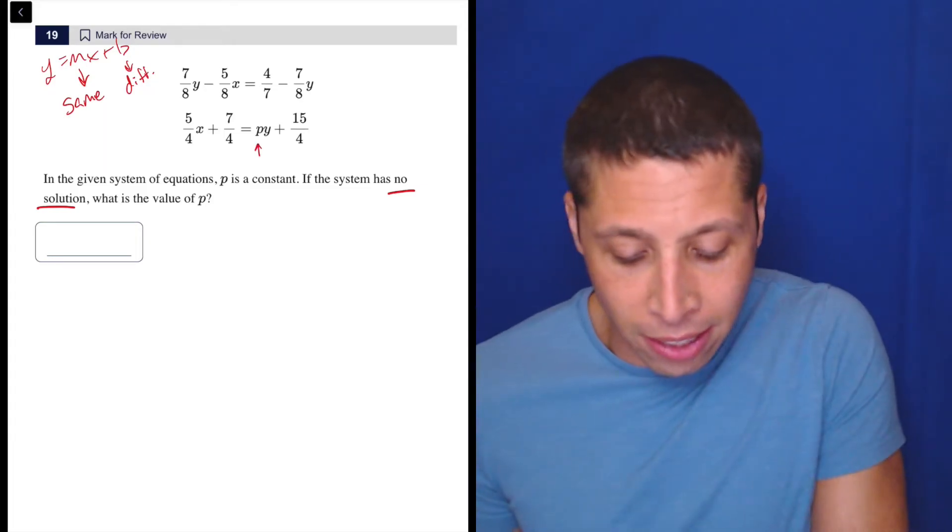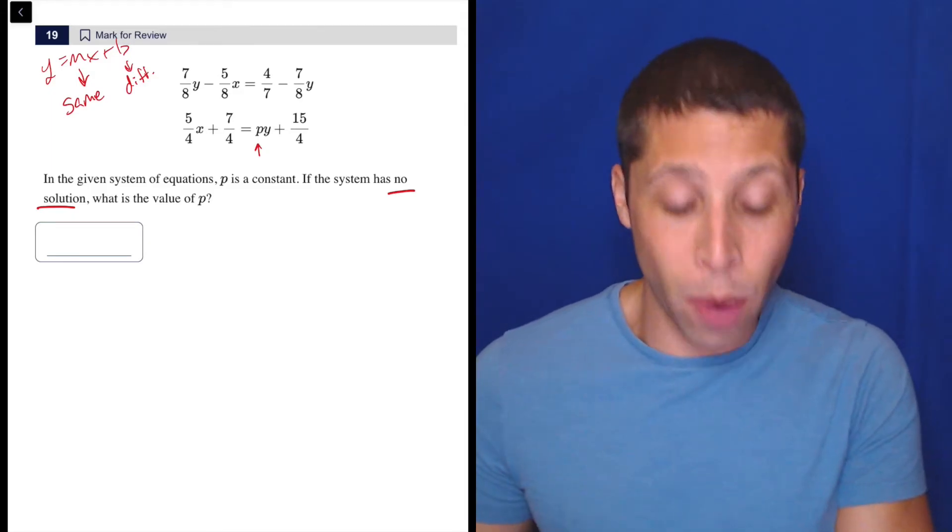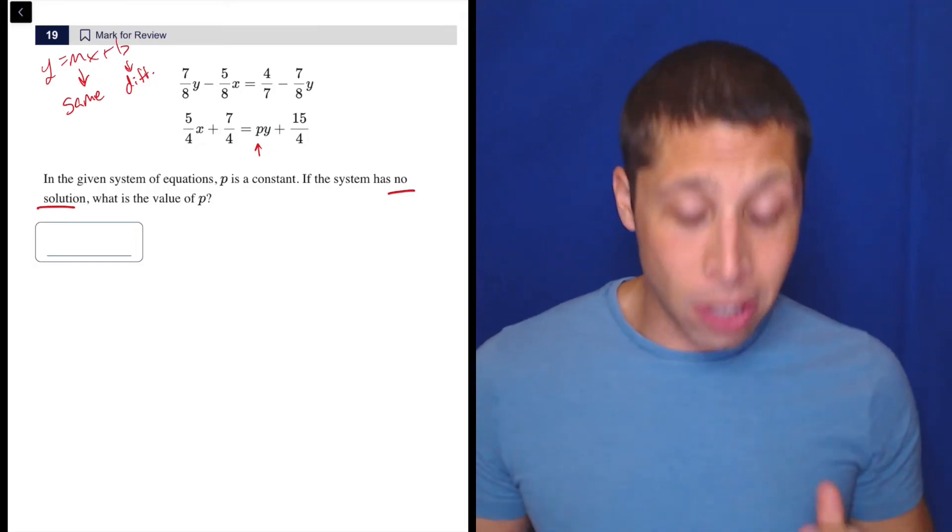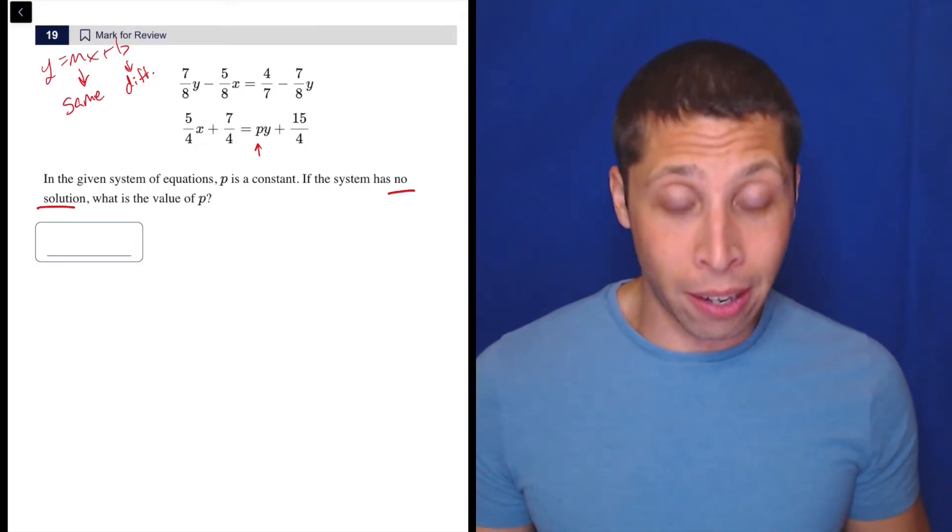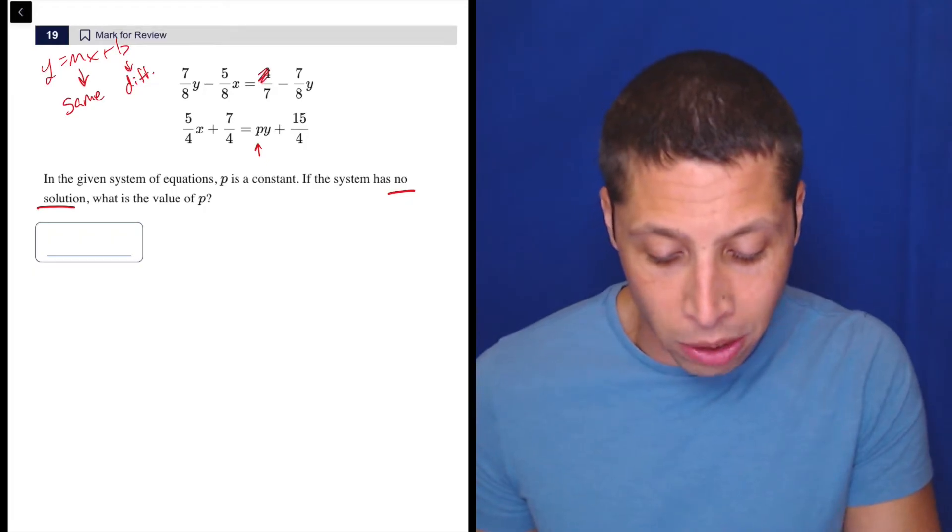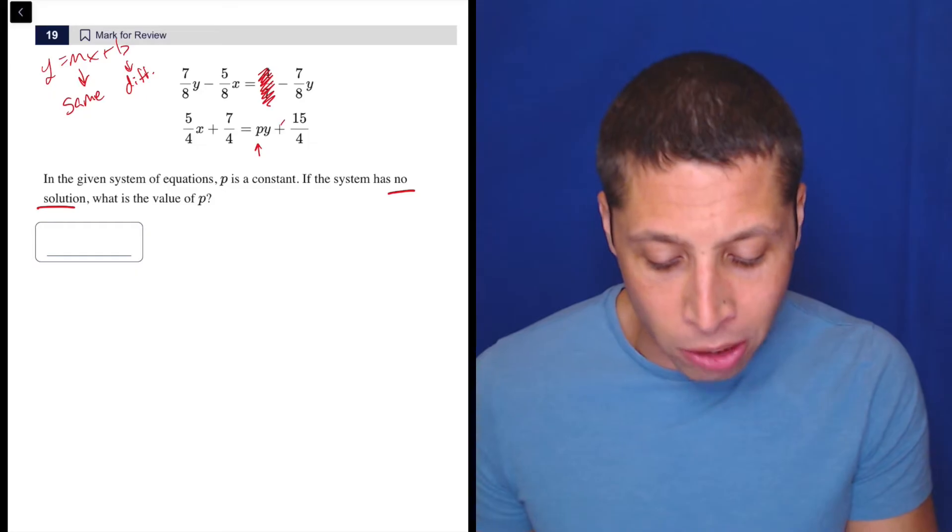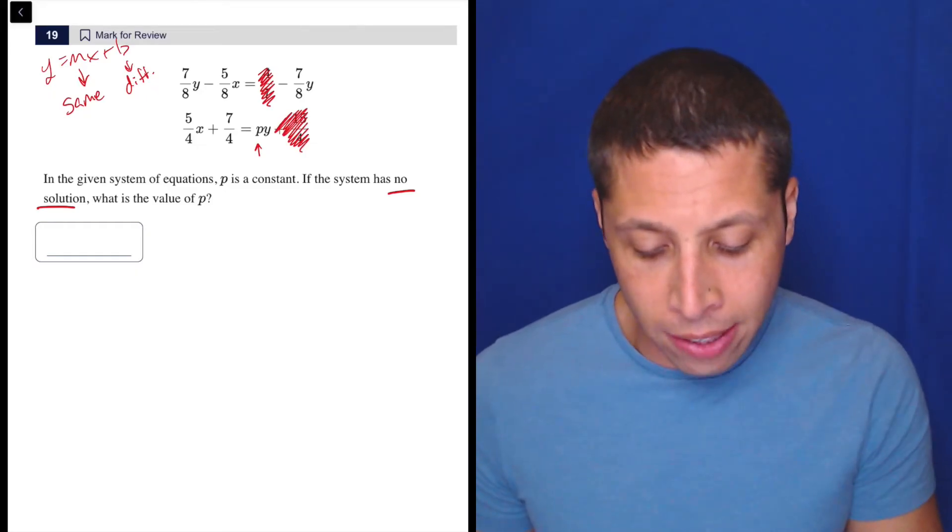Basically, the only unknown in this question is the p. The x and the y are going to behave like the x and y in y equals mx plus b, so you can kind of see there's nothing else. So what this allows me to do is basically get rid of a lot of these terms right away. I know I'm not going to be concerned with this four-sevenths here, there's no variable attached to it. I know I'm not going to be concerned with this fifteen-fourths here, there's no variable attached to it, so we can kill it, and this seven-fourths right here.